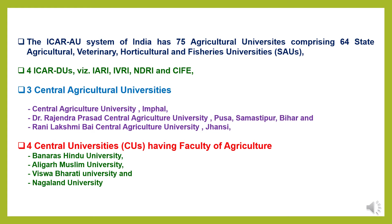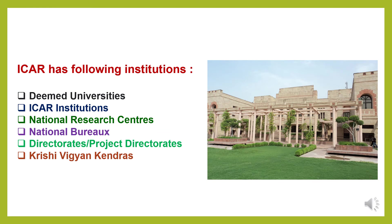ICAR has four deemed universities: IARI, IVRI, NDRI, and CIFE. There are three central agriculture universities: Central Agriculture University in Phal, Dr. Rajendra Prasad Central Agriculture University Pusa (Samastipur, Bihar), and Rani Laxmibai Central Agriculture University, Jhansi. There are also four central universities with faculties of agriculture: Banaras Hindu University, Aligarh Muslim University, Visva-Bharati University, and Nagaland University. Under ICAR, there are different institution types including deemed universities, ICAR institutions, national research centers, national bureaus, directorates, project directorates, and Krishi Vigyan Kendras (KVKs).